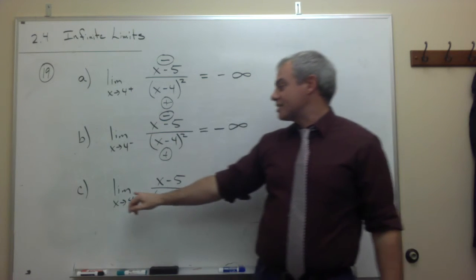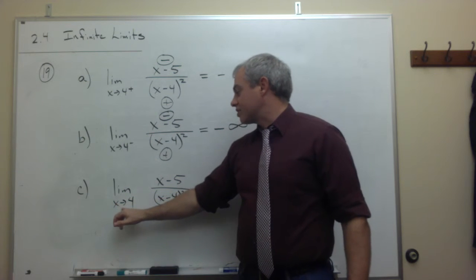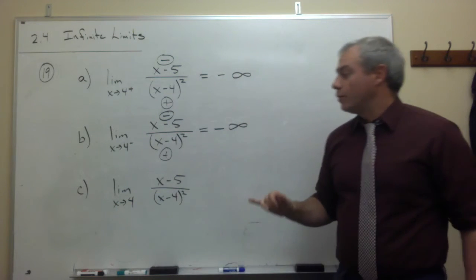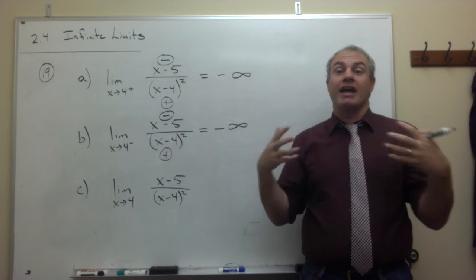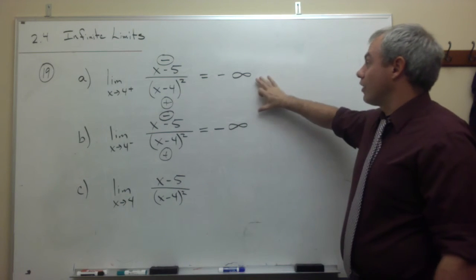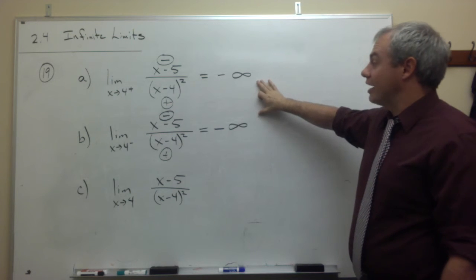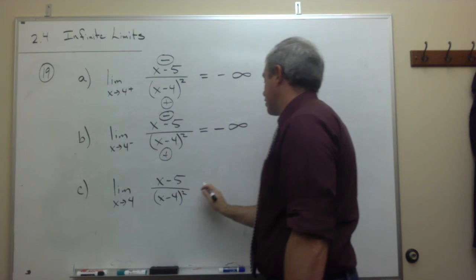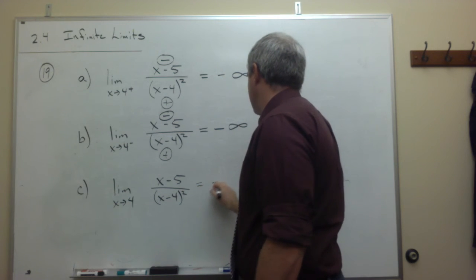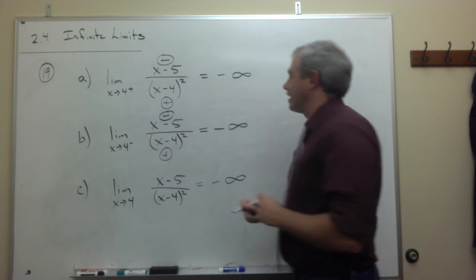Part c is asking me, what's the limit as x goes to 4 of this thing? Which means, do the right-hand limit and the left-hand limit, do they agree? And in this case, the left-hand and the right-hand limit do agree. They agree that they are negative infinity. So the limit as x goes to 4 must be negative infinity.